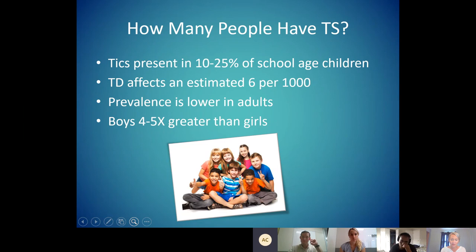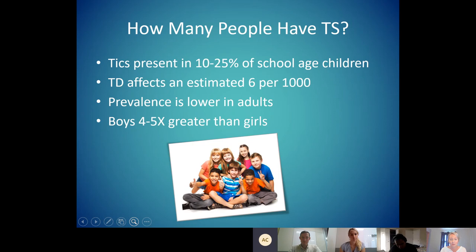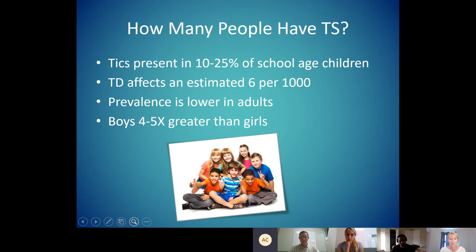Tics are present in 10 to 25 percent of school-age children, making them actually the most common pediatric phenomena — over ADHD, over other behavioral disorders, over anxiety. After this presentation, I guarantee you're going to start seeing tics everywhere. This is the reason why our wait list right now is about to hit two and a half years to get into CBIT treatment. It's so common and yet so understudied and undertrained in medicine that if there is someone with a certification or expertise in Tourette syndrome, this is what the average wait list looks like nationally.